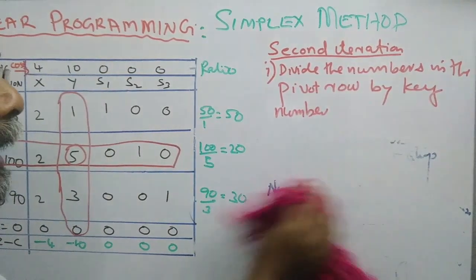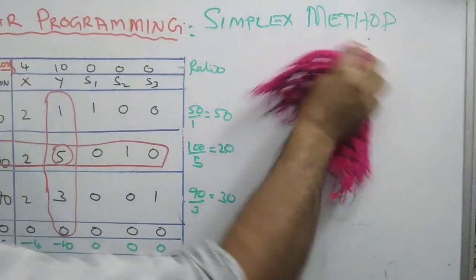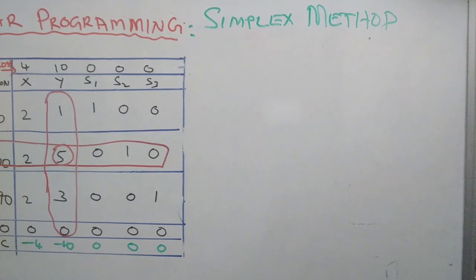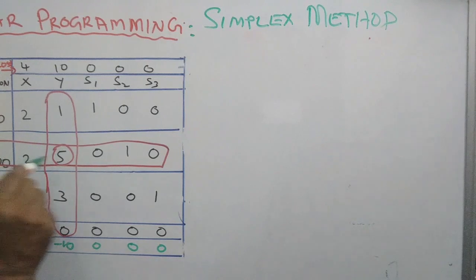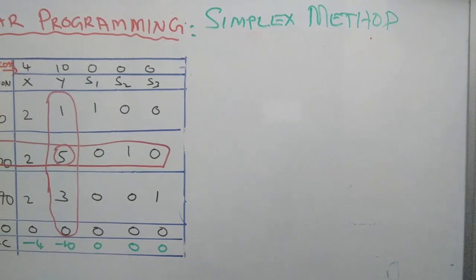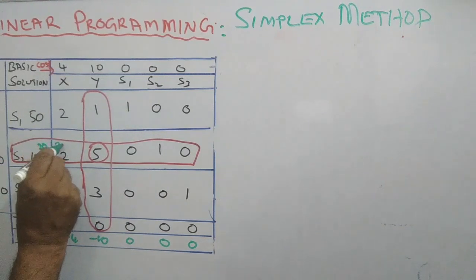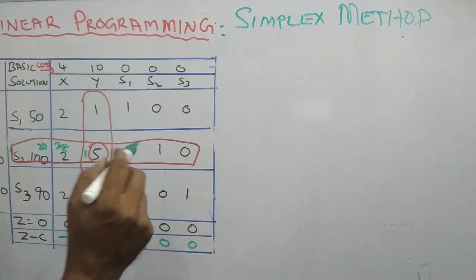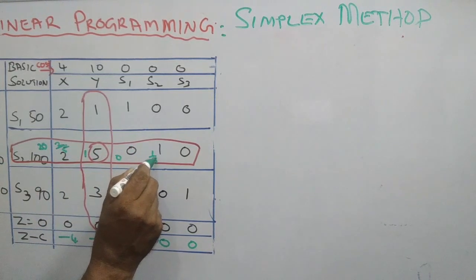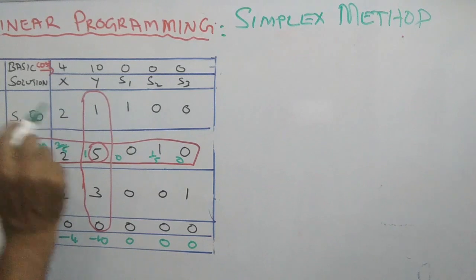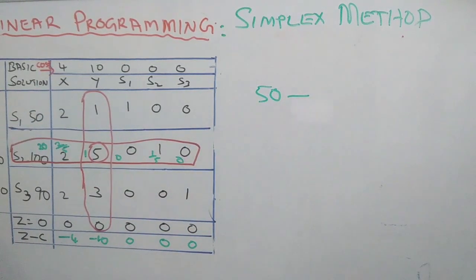Let us evaluate the numerical values by these concepts. Look at the elements and how to calculate them. We are moving into the pivot row of the initial table. The formula is: the number in the pivot row divided by the key number. I am exhibiting in green ink the new numbers: 100 by 5, 2 by 5, 5 by 5, 0 by 5, 1 by 5, 0 by 5. Every element in the pivot row is divided by the key number.